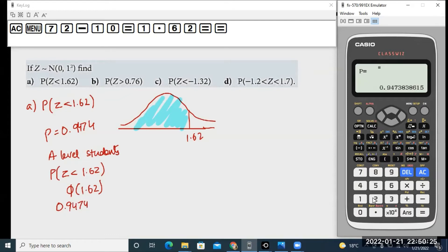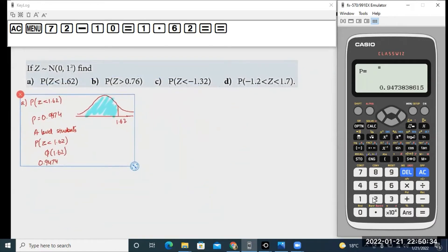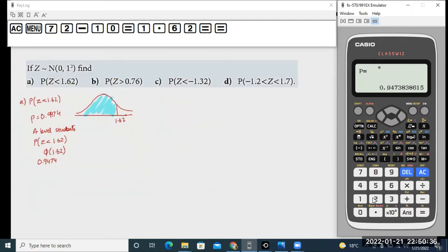For part b, I could again do it directly on my calculator and say that I want to calculate the probability of z greater than 0.76.